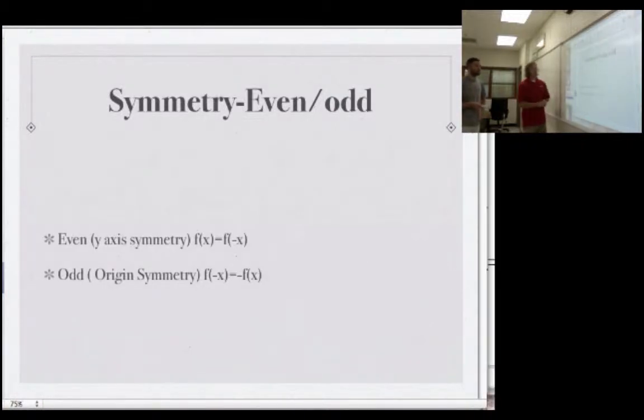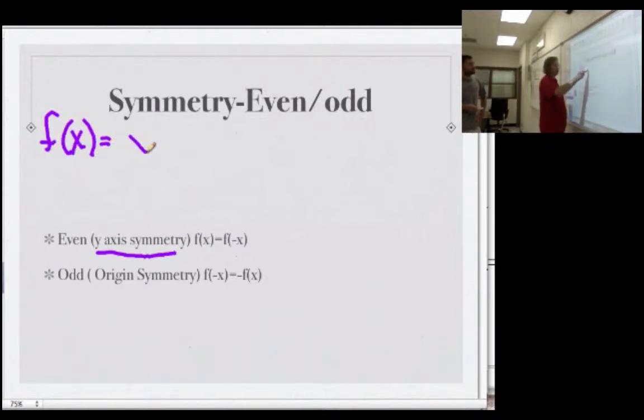Okay, symmetry even and odd. So, even symmetry is usually called y-axis symmetry as well, and my example is going to be if our function is x squared. If the function of x values means you take x and you square it.